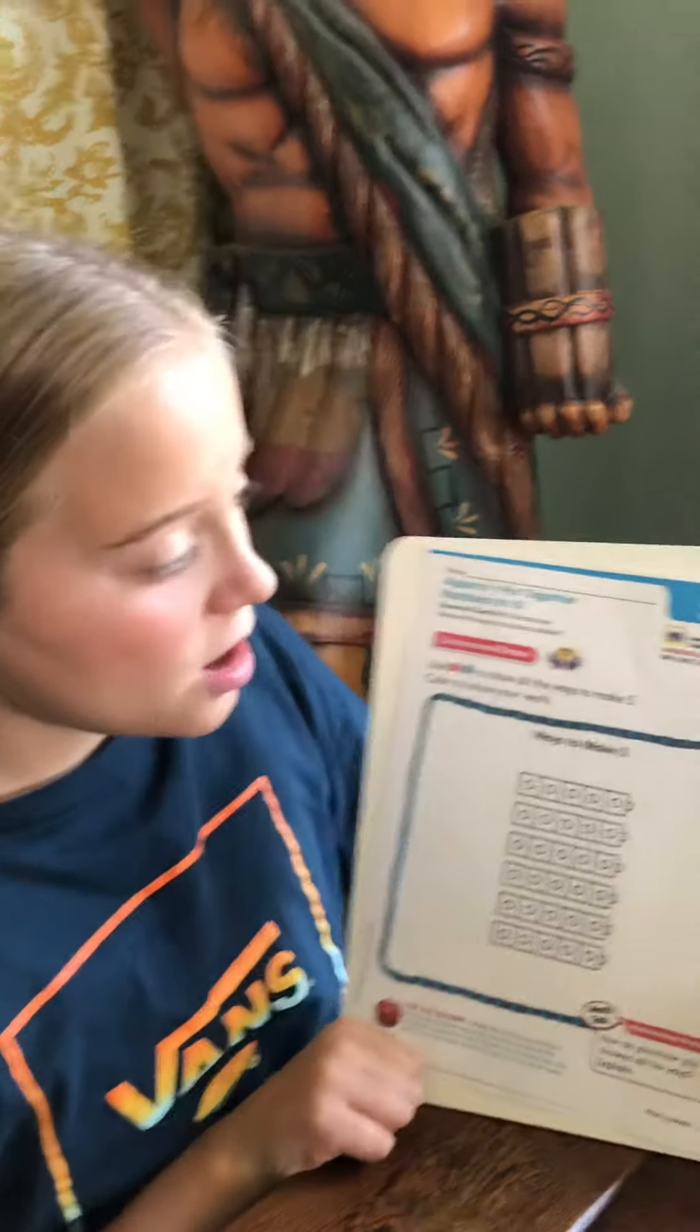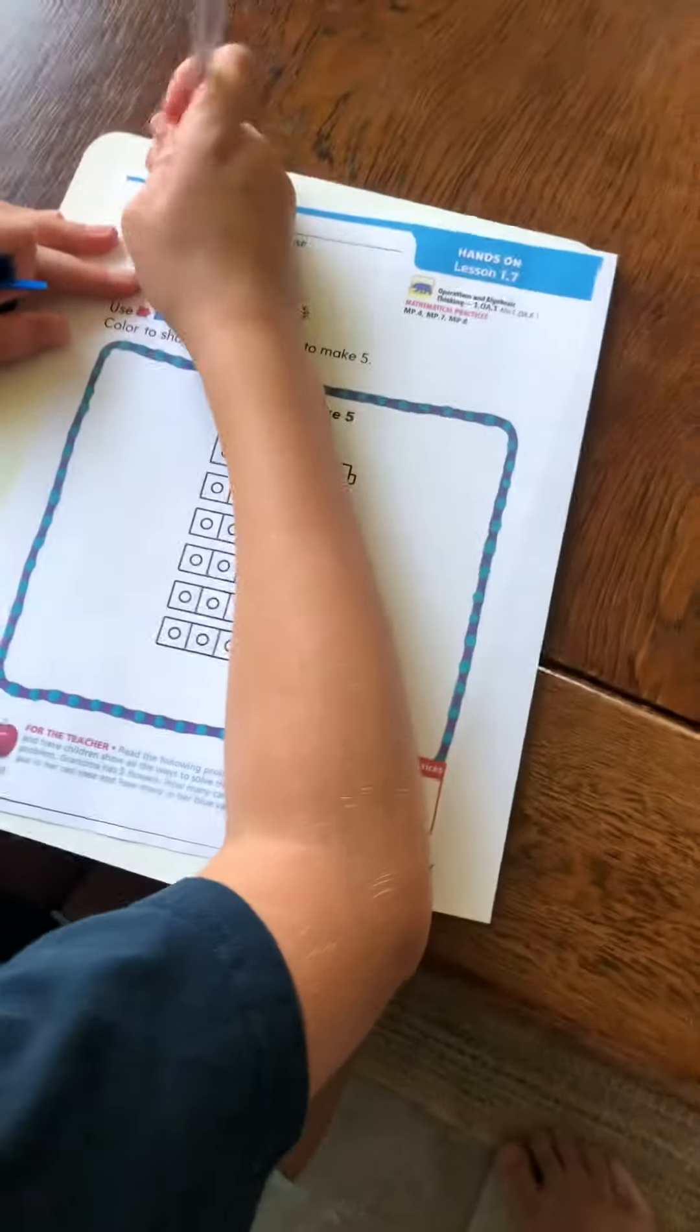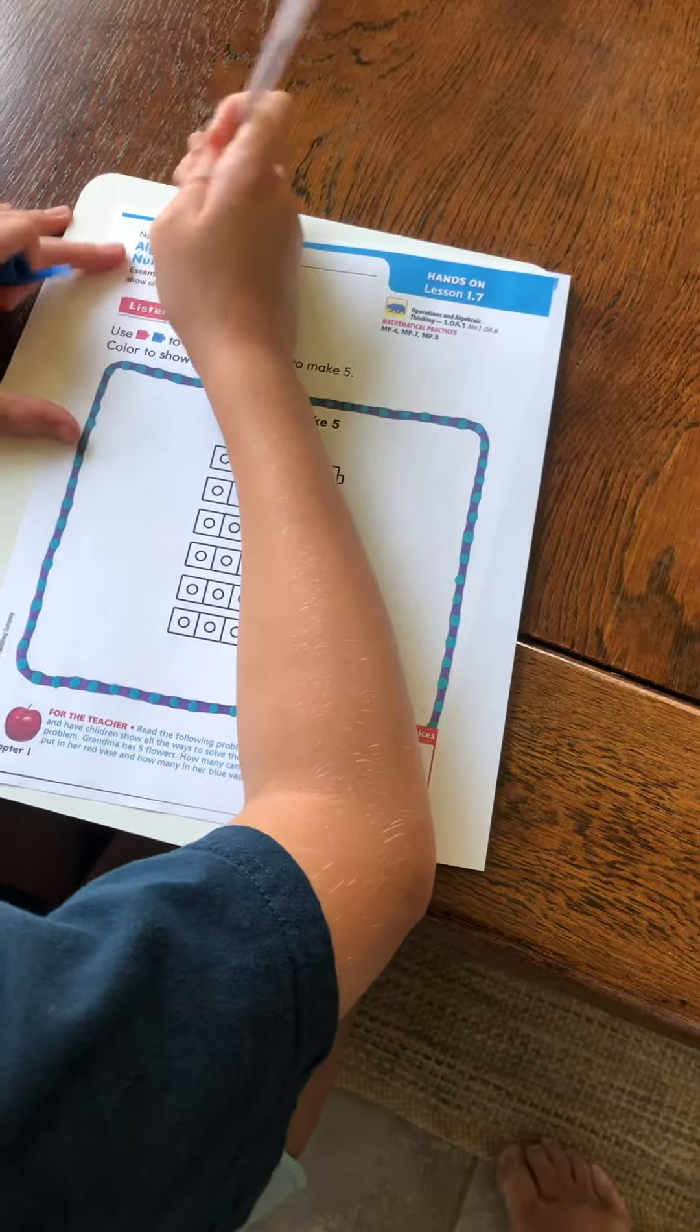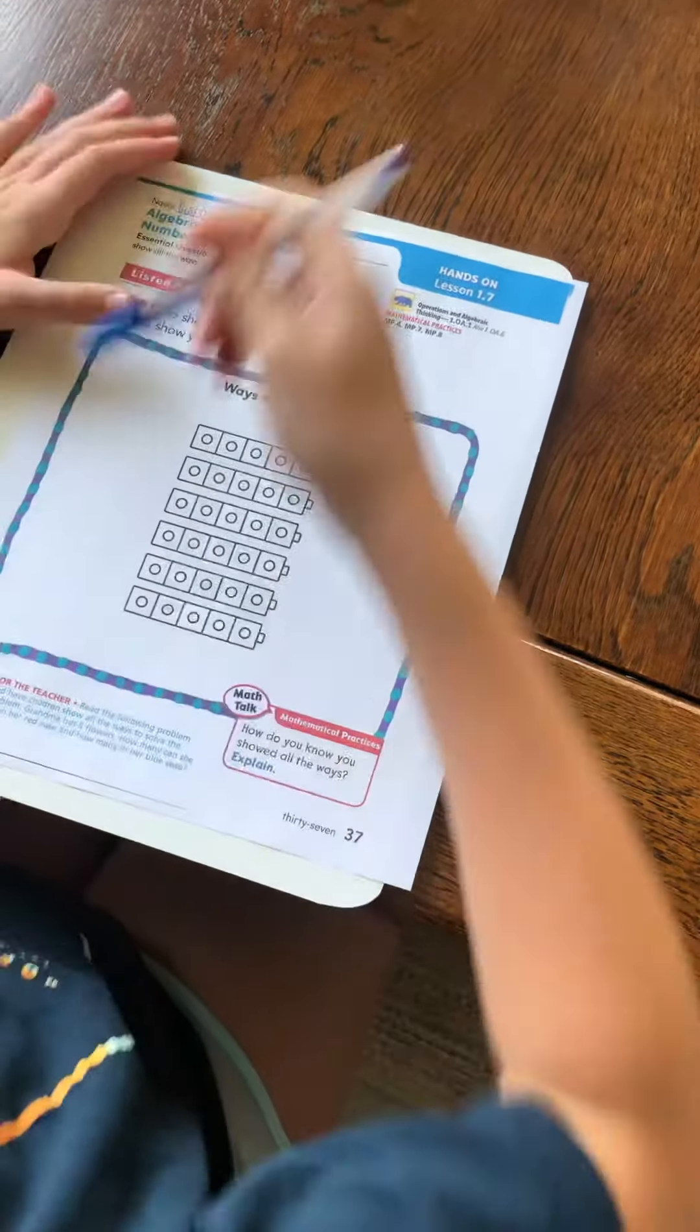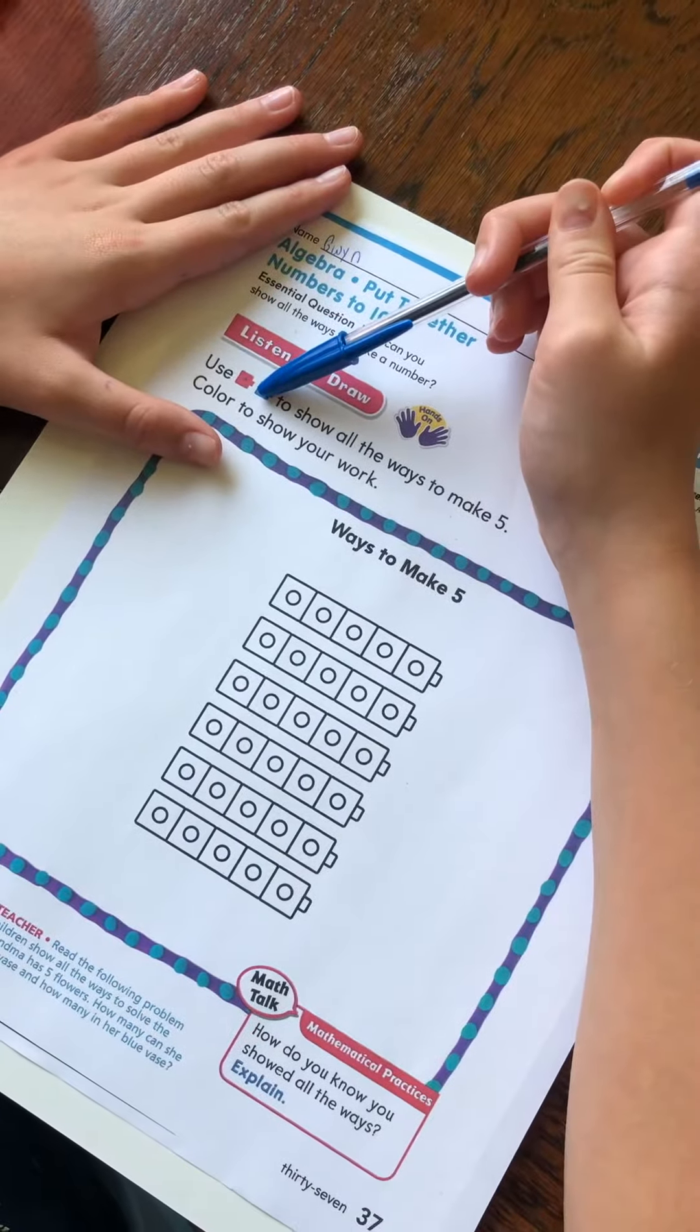Hi boys and girls, this is Glenn and today we're gonna do Go Math lesson 1.7. First I'm always gonna write my name. Okay, now let's read our problem. It says use pink and blue, which